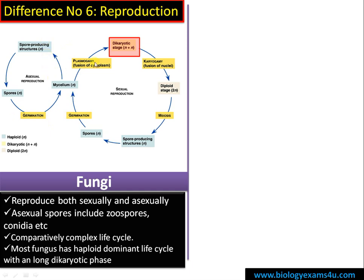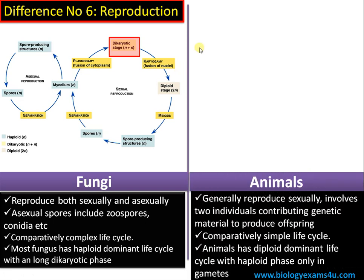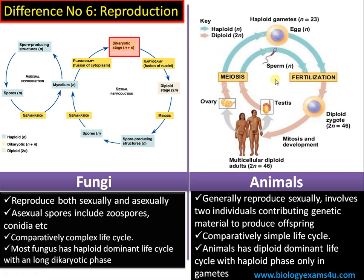Asexual reproduction is very common in fungi and occurs during favorable conditions, whereas sexual reproduction generally occurs during unfavorable conditions. Whereas in animals, reproduction is generally sexual and involves two individuals contributing genetic material to produce offspring. It is a comparatively simple life cycle involving male and female gametes — egg and sperm.